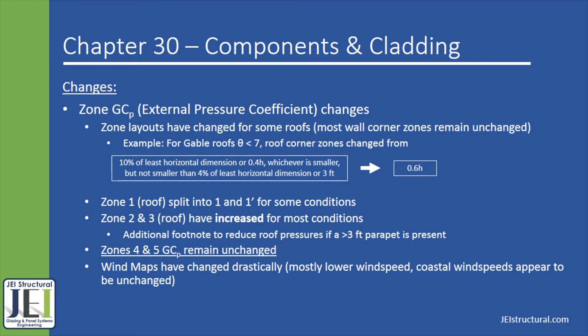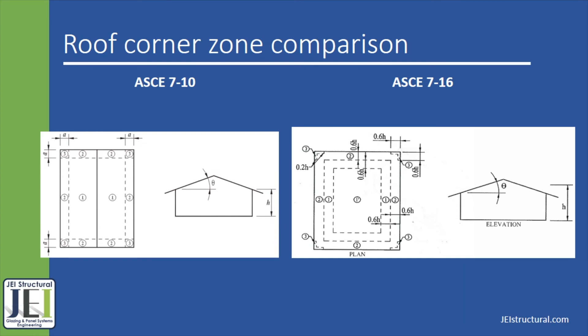In the next slide, there's a comparison of the different roof zone dimensions between the ASCE 7-10 and the 7-16. Here is a comparison of how the roof corner zones have changed from the 7-10 to the 7-16. For our projects, this mostly affects the pressures on skylights and rooftop appurtenances. For a gable roof, the interior roof zone has been split into zones 1 and 1-prime, and the roof corner zone 3 shape has changed considerably, as you can see in the roof zone dimensions below. Overall, this may affect fastening patterns for roofs within the upcoming International Building Code.